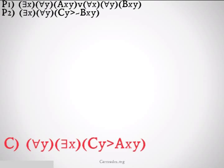To finish up, we're going to look at a proof using all of these rules. If you want to try this on your own, do that now; otherwise, follow along. We have premise 1: 'there exists an X such that for all Y, X bears relation A to Y' or 'for all X and for all Y, X bears relation B to Y.' Premise 2: 'there exists an X such that for all Y, Y is C implies it's not the case that X bears relation B to Y.' Our conclusion is: 'for all Y, there exists an X such that Y is C implies X bears relation A to Y.'